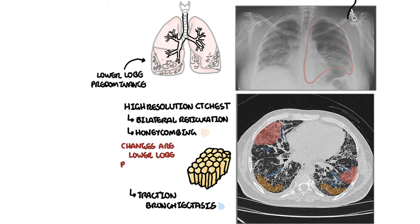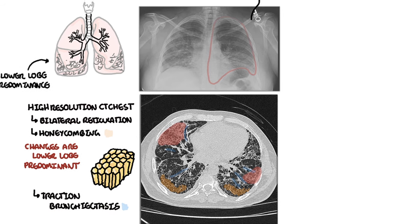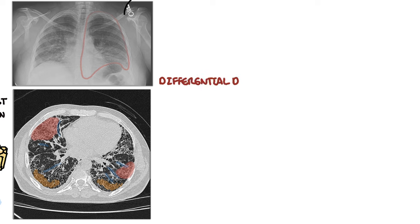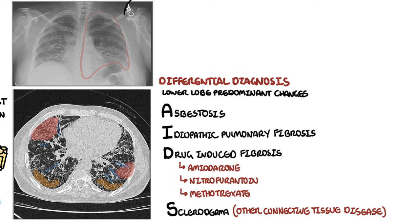Changes seen in idiopathic pulmonary fibrosis have lower lobe predominance. The differential diagnosis for lower lobe predominant disease can be remembered with the acronym AIDS: A for asbestosis, I for idiopathic pulmonary fibrosis, D for drug-induced (such as amiodarone, nitrofurantoin, and methotrexate), and S for scleroderma and other connective tissue diseases — except ankylosing spondylitis, which is the only one with upper lobe predominance.